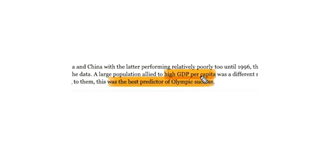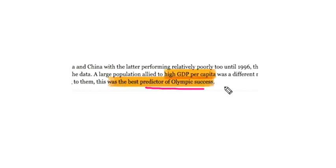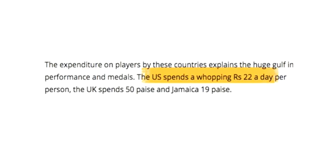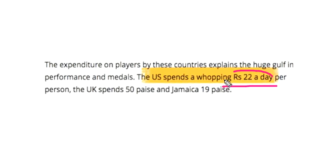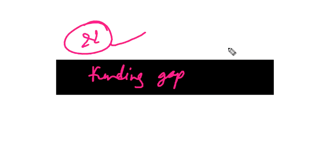A higher GDP per capita is the best predictor of Olympic success. Countries like USA and UK spend significantly more — the USA spends the equivalent of 22 rupees per athlete per day on Olympics preparation, while India spends only 3 paise per day. This represents a massive funding gap.